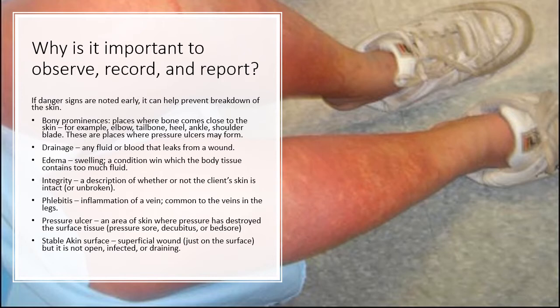Bony prominences are places where bone comes close to the skin — for example, the elbow, tailbone, heel, ankle, and shoulder blades. These are places where pressure ulcers may form.